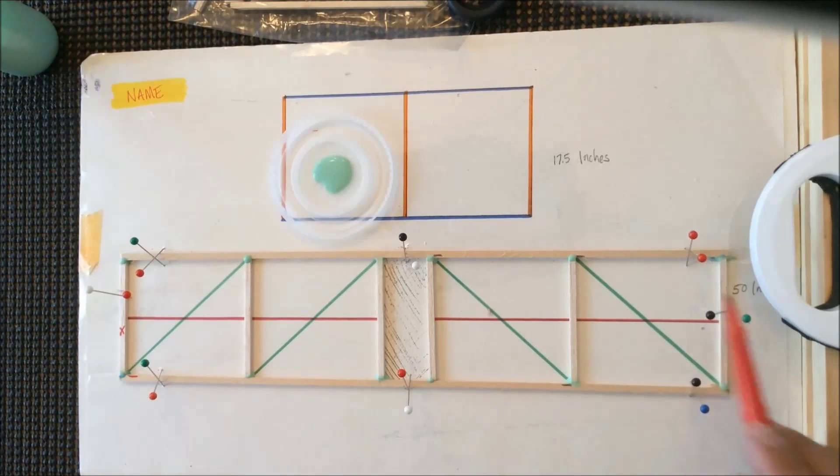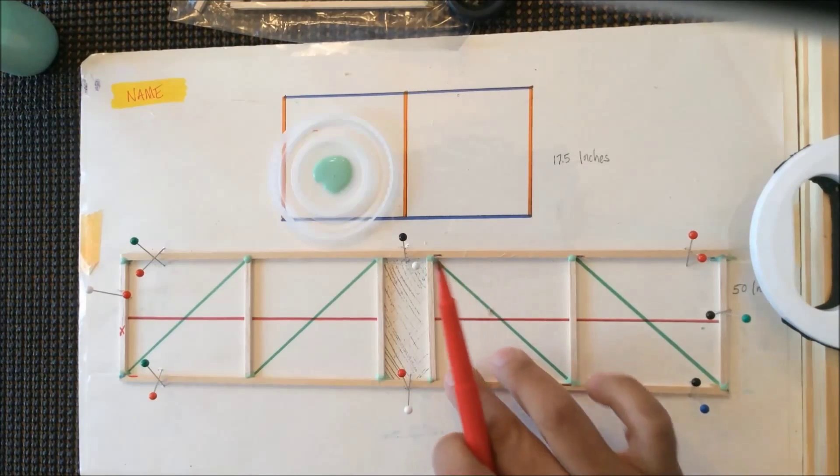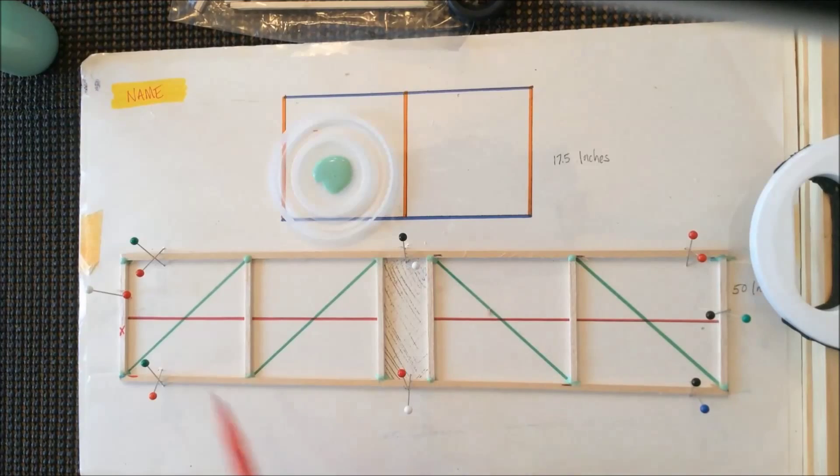Now we have our frame completed, and we have our vertical lines finished. The next type of line we're going to do are horizontals, and then finally diagonals. You'll notice with the diagonals.